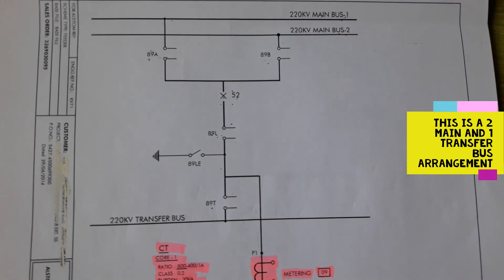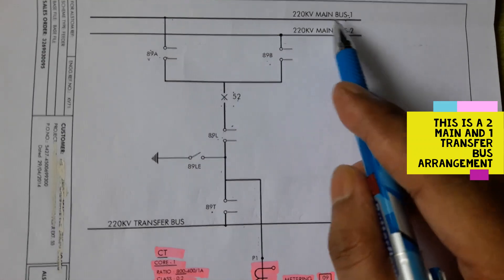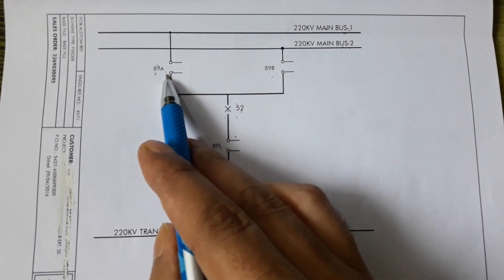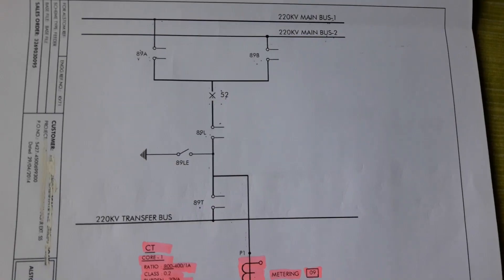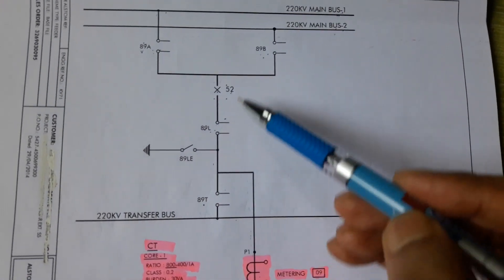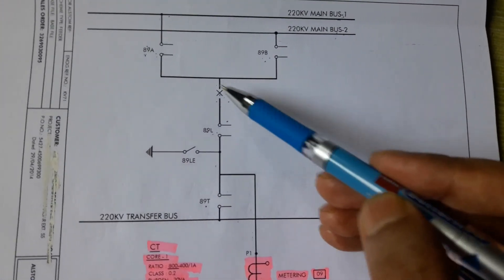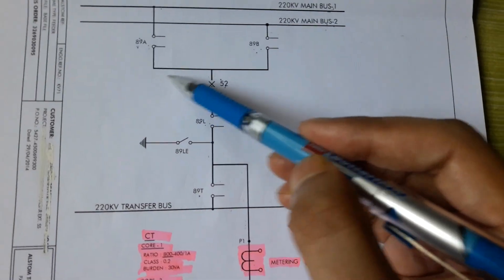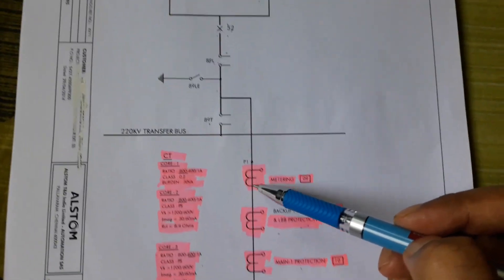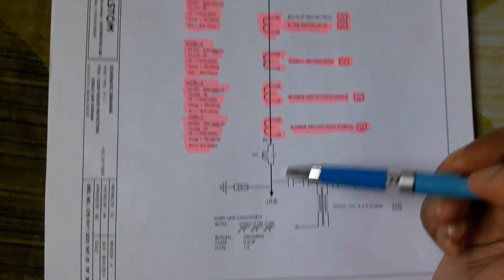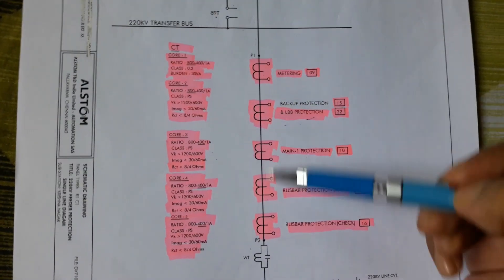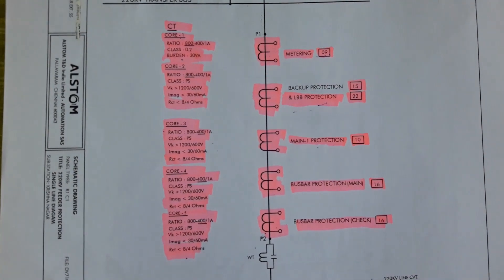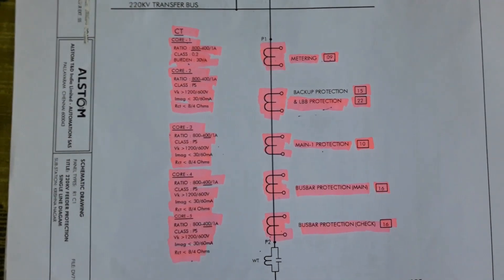This is the 220 kV feeder bay which may be connected with main bus 1 or main bus 2 by connecting either 89A isolator or 89B isolator. Suppose 89A, 89L and 52 breaker all are closed, then this bay is connected with main bus 1 and the load will flow through this CT. P1 and P2 represent the primary start of the CT, which has 5 number of CT secondary cores.